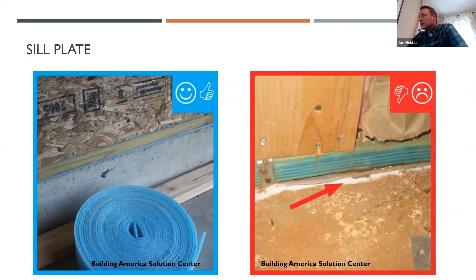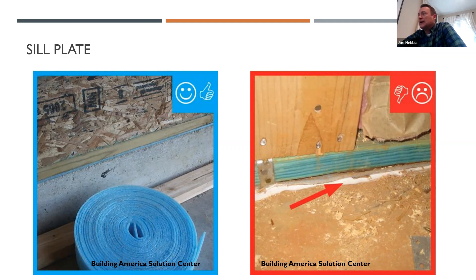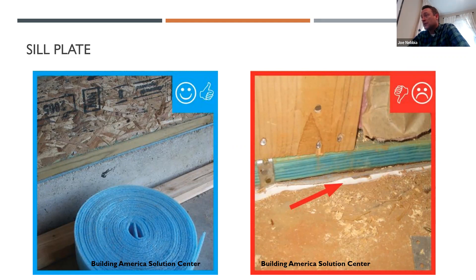The sill plate joint with the foundation must be sealed. This is an area where we see a lot of blower door tests failing. On the left you see a product doing air sealing between the sill plate and the foundation; on the right, there's been no sealing done. This can be especially problematic because we've got a straight piece of lumber sitting on top of a foundation that may have bumps and curves, so there are a lot of places for air to get in. There are gaskets, foams, and caulks — any of these are allowed, but you have to do something at that joint. You really probably won't pass your blower door test if you don't.